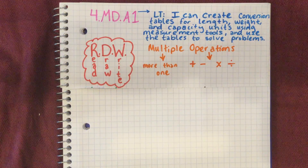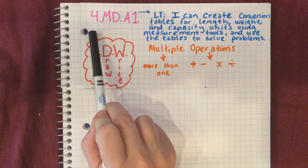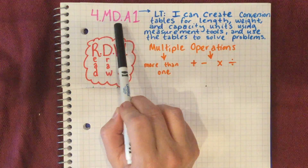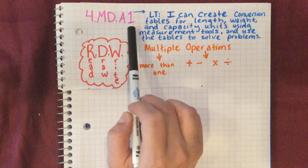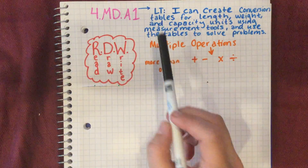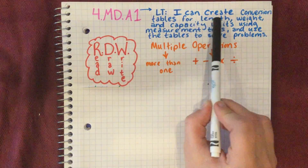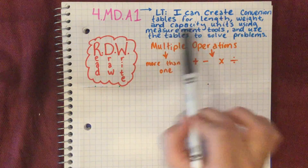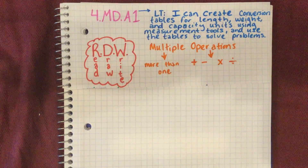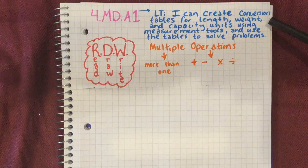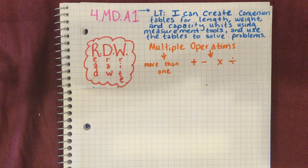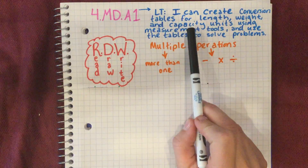Hi friends, welcome back. We are going to continue working on the fourth grade measurement and data standard 4.MD.A.1 — the first of the A standards. There's also an A2 we'll talk about tomorrow. This standard helps us meet the target: I can create conversion tables for length, width, weight, and capacity units using measurement tools and use the tables to solve problems. Yesterday we covered length and weight; today we're focusing on capacity.